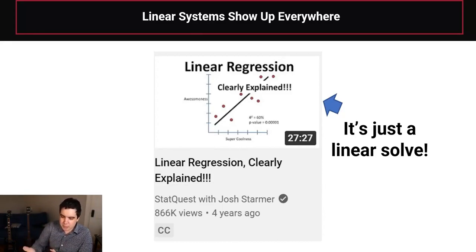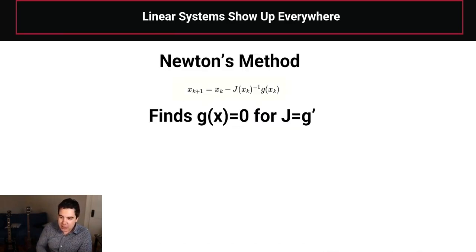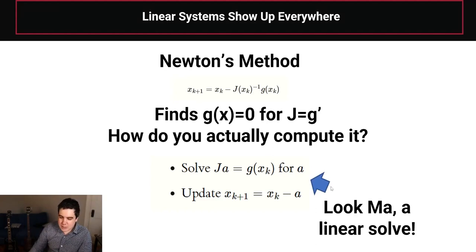So for example, if you go to a YouTube video that's like linear regression clearly explained, the clear explanation is just a linear solve, bro. The next thing is, what about Newton's method? You're trying to solve equations for implicit equations for where they equal zero. The main step inside of there is just a linear solve. So looking, there's a linear solve in here.